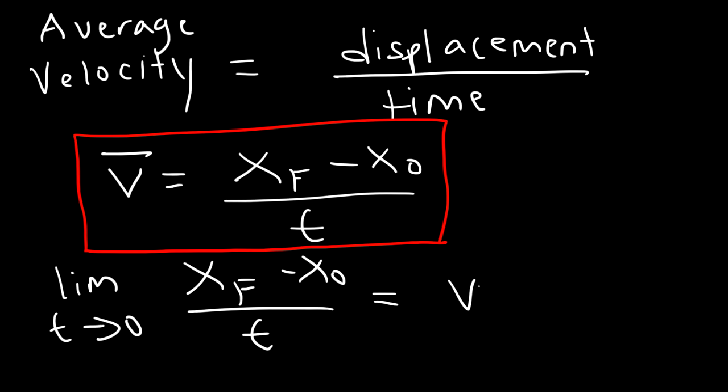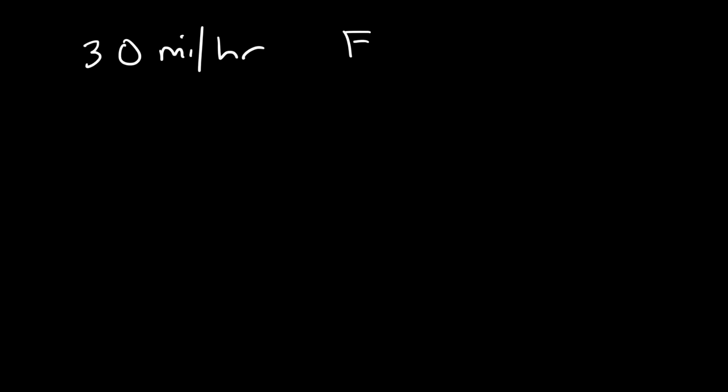The instantaneous velocity uses the same formula, but when t becomes very, very small it gives you the instantaneous velocity. For example, a car moving at 30 miles per hour traveling east — that magnitude and direction together represent the velocity of the vehicle. So every hour, the car travels a distance of 30 miles.